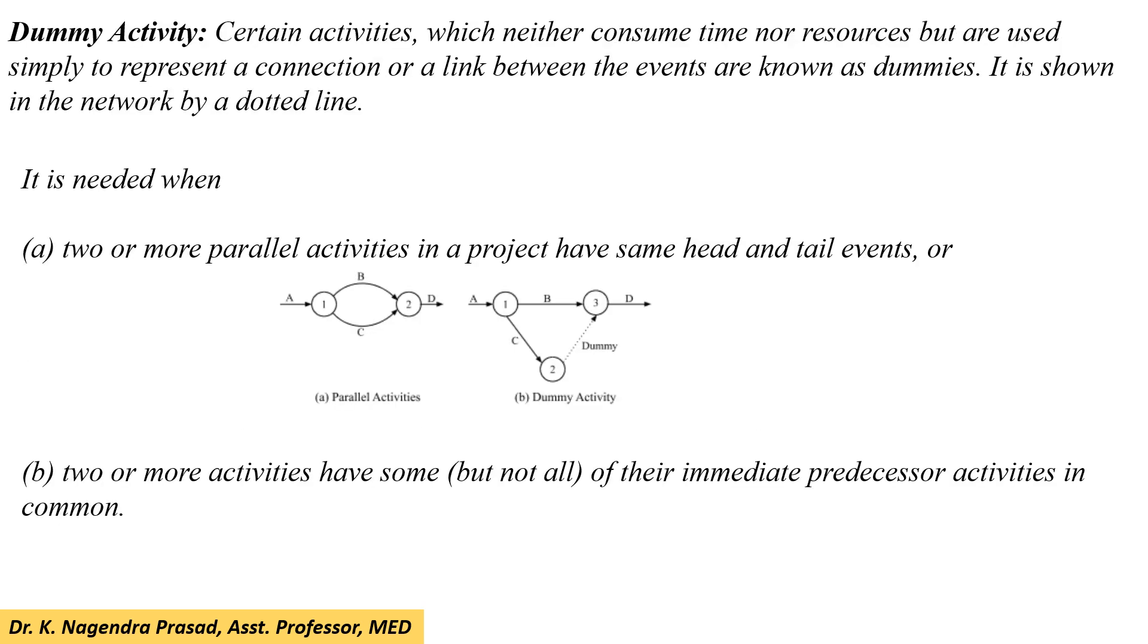Let's see the solution. In the previous lecture, we discussed what is dummy activity and the need for these dummy activities. Certain activities which neither consume time nor resources but are used simply to represent a connection or a link between the events are known as dummy activities. It is shown in the network diagram by a dotted line.